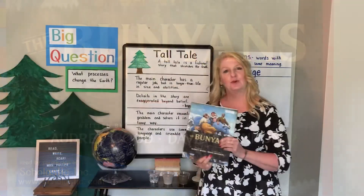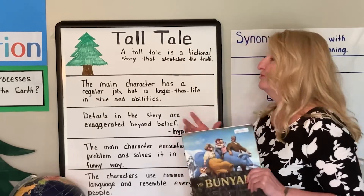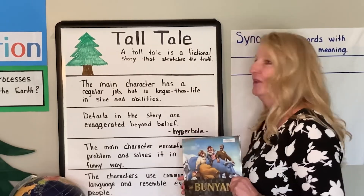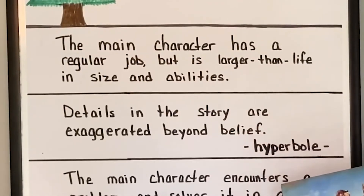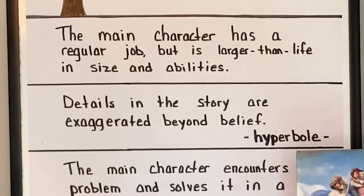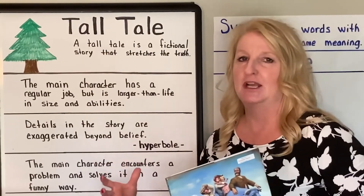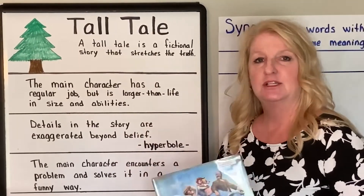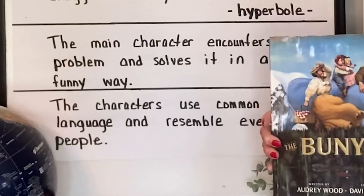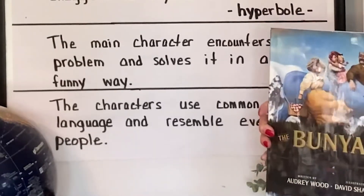The Bunyans is a type of story called a tall tale. A tall tale is a fictional or made-up story that stretches the truth. As I read today, I want us to listen for elements that make this story a tall tale. Those include: the main character has a regular job but is larger than life in size and abilities; details in the story are exaggerated beyond belief — and exaggerated means to make larger or to stretch. When things are exaggerated in a story, that's also called a hyperbole. The main character encounters a problem and solves it in a funny way, and the characters use common language and resemble everyday people.